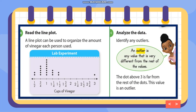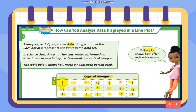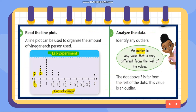We are going to make a line plot titled 'Lab Experiment' showing the number of cups of vinegar. One-half has two data points; three-fourths has four; one cup has eight data points; one and one-fourth has three; one and one-half has two; and one and three-fourths has none. Then we have three, which is the outlier.